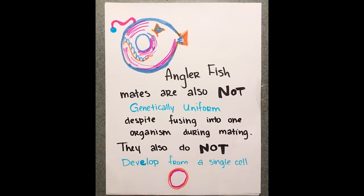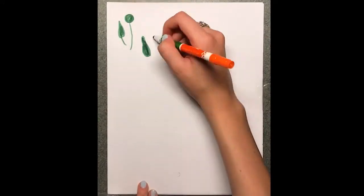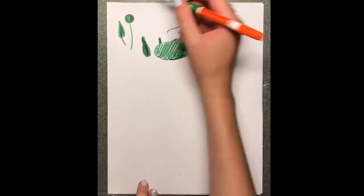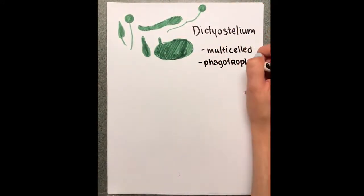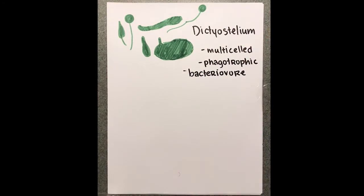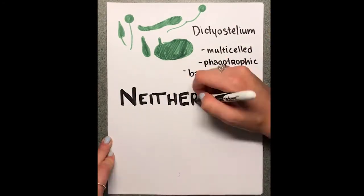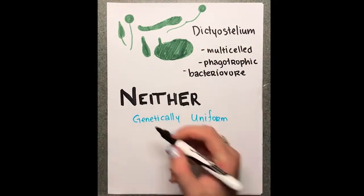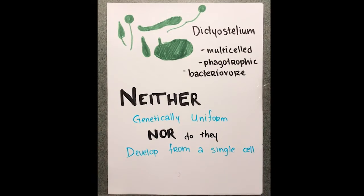Additionally, anglerfish do not develop from a single cell, similarly to Dictyostelium, a multi-celled, eukaryotic, phagotrophic, bacterial form. Dictyostelium is also neither genetically uniform, nor does it develop from a single cell.